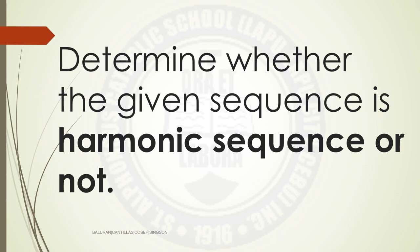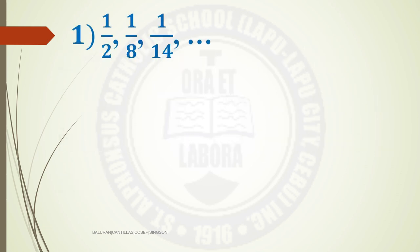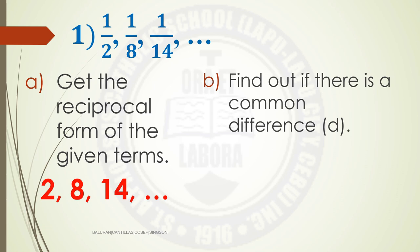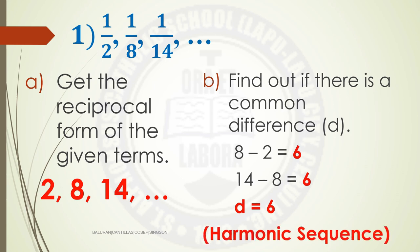Determine whether the given sequence is a harmonic sequence or not. First example: 1/2, 1/8, 1/14, and so on. First step is to find the reciprocal form of the given terms: 2, 8, 14. Next, find the common difference: 8 minus 2 equals 6, and 14 minus 8 equals 6. Therefore, D equals 6, which is our common difference, and we can say that this is a harmonic sequence.